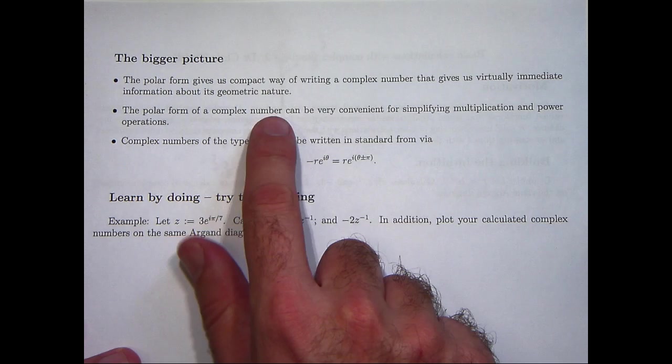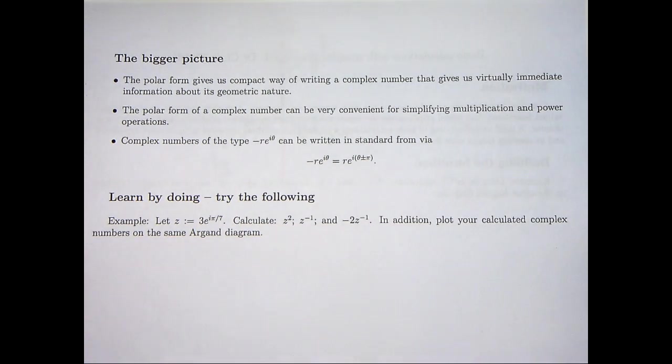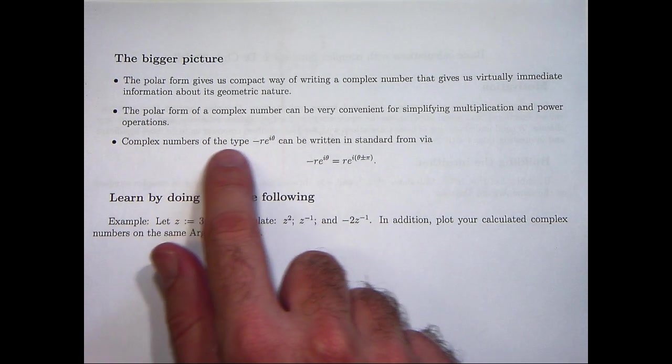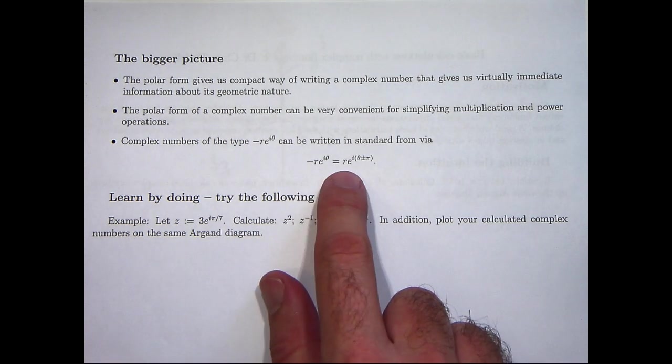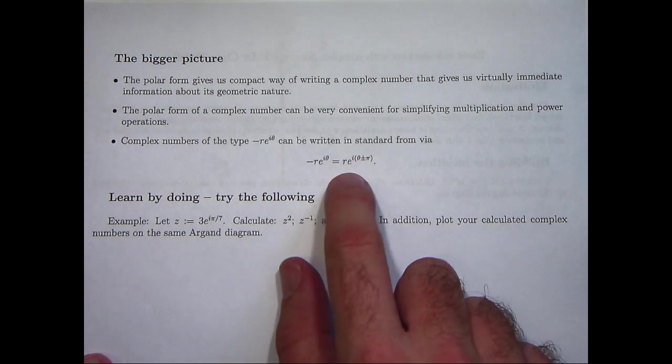Secondly, the polar form of a complex number is very convenient for simplifying multiplication and power operations. That's another excellent property of the polar form. And finally, as we saw in our example, you can write complex numbers of this type by just using -1 = e^(iπ) or e^(-iπ), depending on what's more useful.